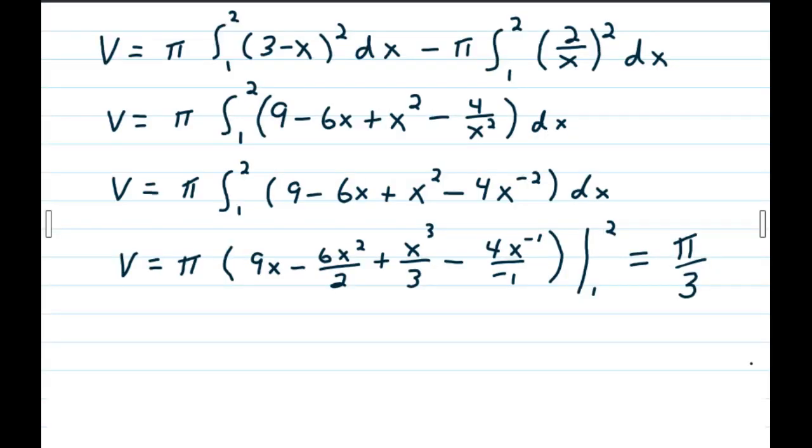So we do our fun algebra work. We have 3 minus x quantity squared turning into 9 minus 6x plus x squared, then minus the second function, which is little r of x, becomes 4 over x squared.